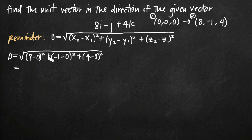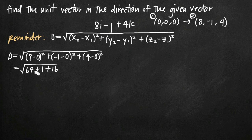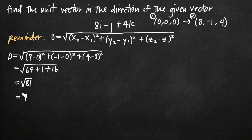This equation gives us the length of our original vector. Squaring each term: 8 squared is 64, negative 1 squared is positive 1, and 4 squared is 16. Adding these together gives us the square root of 81, since 64 plus 1 plus 16 equals 81. So the length of our original vector is 9. We don't need to worry about a negative value because length is always a positive physical measurement.